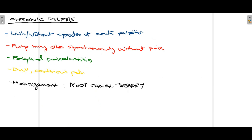Chronic irreversible pulpitis transitions from acute irreversible pulpitis — if treatment is neglected at the acute stage it leads to chronic irreversible pulpitis. It may arise either with or without episodes of acute pulpitis. In chronic irreversible pulpitis, the pulp may die spontaneously without the patient even noticing significant pain. Periapical periodontitis can develop, causing inflammation of the periodontium surrounding the tooth with further complications. The pain is continuously present but is often dull compared to acute pulpitis. The most effective treatment is root canal therapy, which maintains the tooth for at least 10 to 15 years.